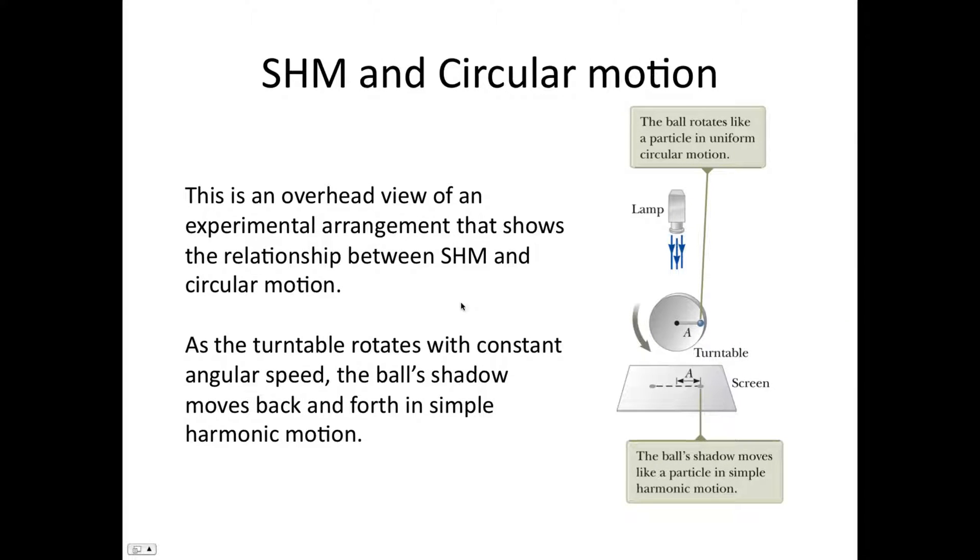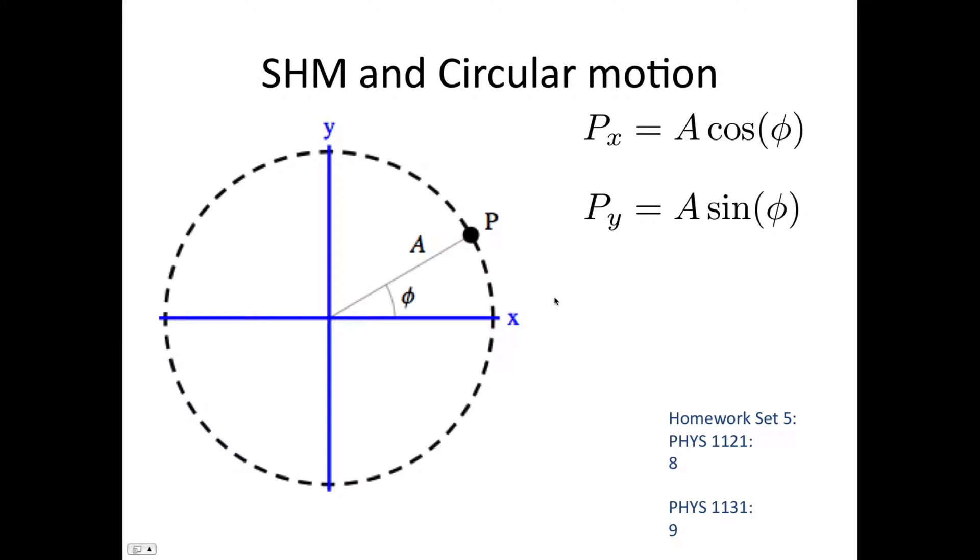We're now going to be looking at the link between simple harmonic motion and circular motion. If you imagine an object undergoing circular motion, and then looking down from on top, looking at the projection of the shadow of that object, the projection is actually undergoing simple harmonic motion.